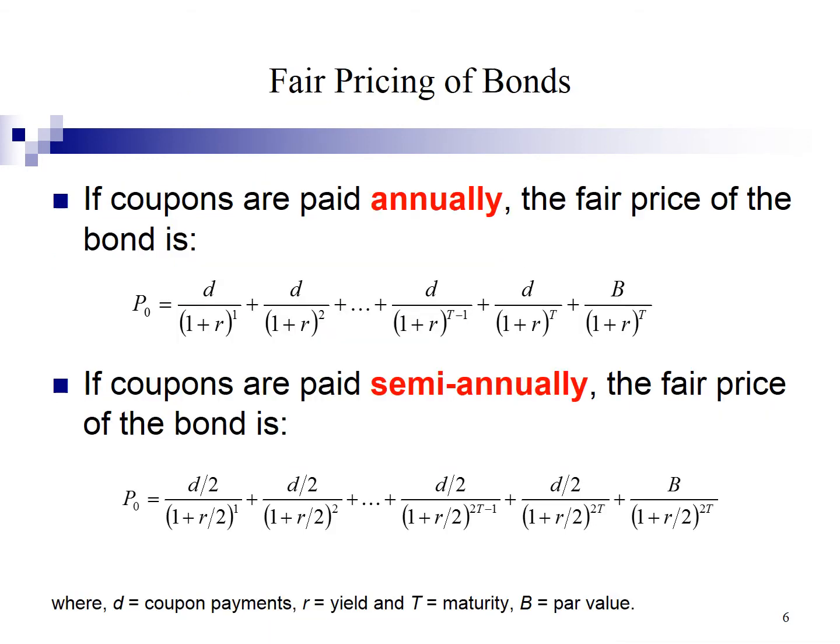The procedure used to value bonds paying interest semi-annually is different from annual coupon bond. It involves three adjustments. First, we have to convert annual interest rate R to semi-annual interest. We divide R by 2. Second, there is a need to convert the number of years to the number of half-yearly periods. We multiply T by 2. The third adjustment is converting the annual discount rate to a semi-annual rate by dividing R by 2.